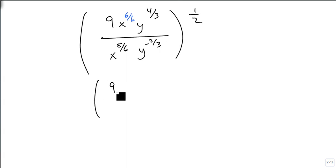The 9 is going to stay alone. 6 is bigger than 5, so we're going to stay on top. 6 6th minus 5 6ths is 1 6th. The 4 3rds and the minus 2 3rds, again, this comes up to the top and becomes a positive 2 3rds, so we're going to add 2 3rds. So we're going to get y to the 6 3rds. And we've now simplified inside the parentheses, and 6 3rds is, of course, 2.